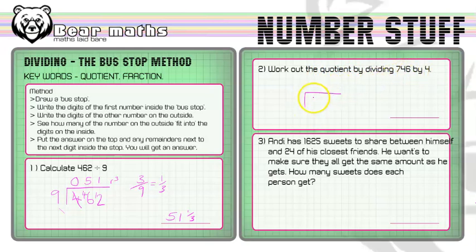We're going to draw the bus stop. We're going to put the 7, the 4, the 6. We're going to put the 4 on the outside. This time, 4 does fit into 7. It goes one time with 3 left over. 4 then fits into 34. Well, it goes into 32 eight times. OK? 4 times table. Because 4 times 8 is 32.